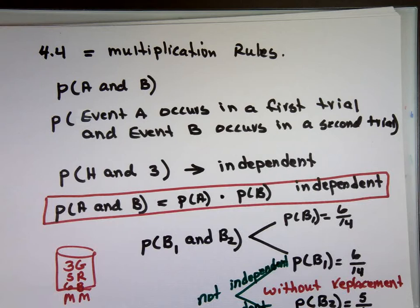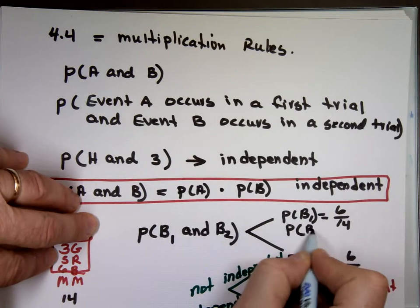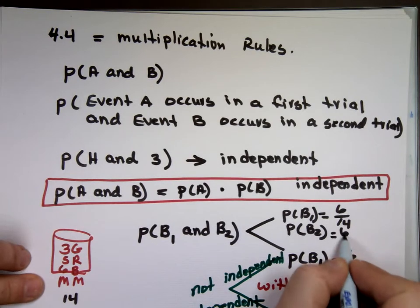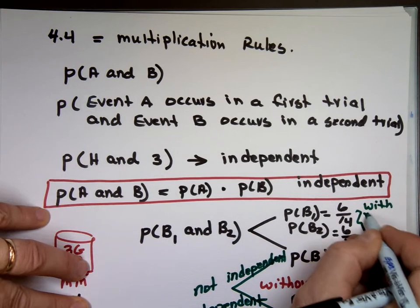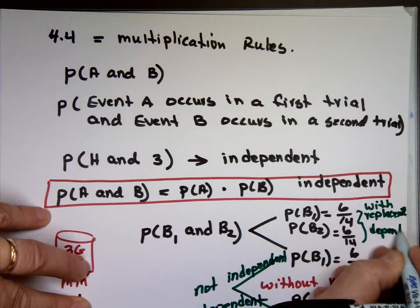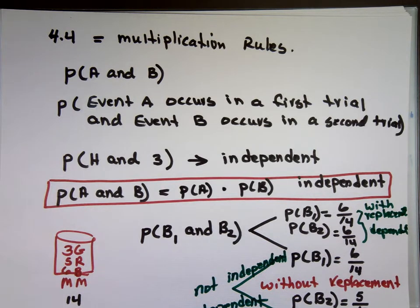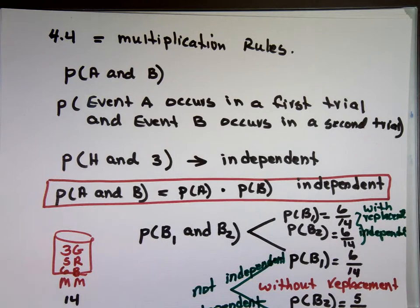These events are dependent on each other. But if you put it back in, now what's the chance the second one is a blue? 6 out of 14 — because nothing changed. So with replacement, the events are independent. Look for these keywords when doing problems: with replacement means independent, and you can use that equation. Without replacement means dependent, and you need a different equation.